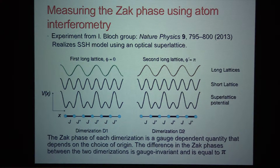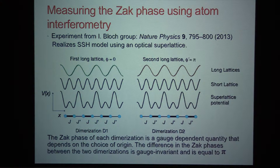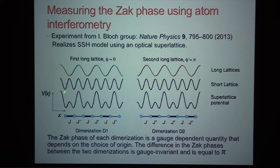Here's an experiment done in Immanuel Bloch's group in Germany, where they realized this Hamiltonian exactly. What they did was superimpose two optical lattices, one with twice the wavelength of the other — twice the periodicity. You take two lasers, one at 532 nanometers and one at 1064 nanometers, create optical lattices with both, and add up the two potentials. The resulting potential realizes something where you tunnel fast here, then slow, fast, then slow — exactly the SSH model.